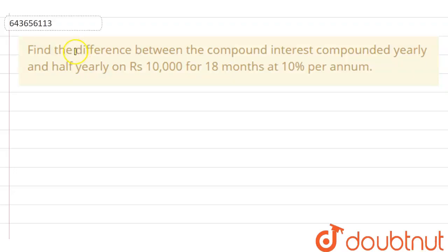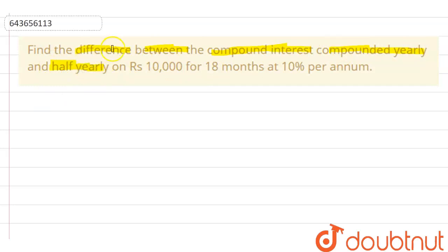Here the question is: find the difference between the compound interest compounded annually — or you can say yearly — and half yearly. The question says find the difference between compound interest compounded yearly and half yearly on rupees 10,000 for 18 months at 10 percent per annum.